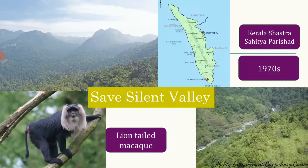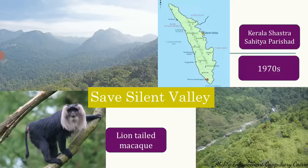The movement gained a lot of momentum and recognition. It was not just a scientific movement spearheaded by the Kerala Shastra Sahitya Parishad — there were also authors, and the media brought it to public notice through plays, stories, and other formats, highlighting the severe ecological and environmental impacts the dam would cause. This became one of the first mass movements in Indian history to attract both national and international attention.